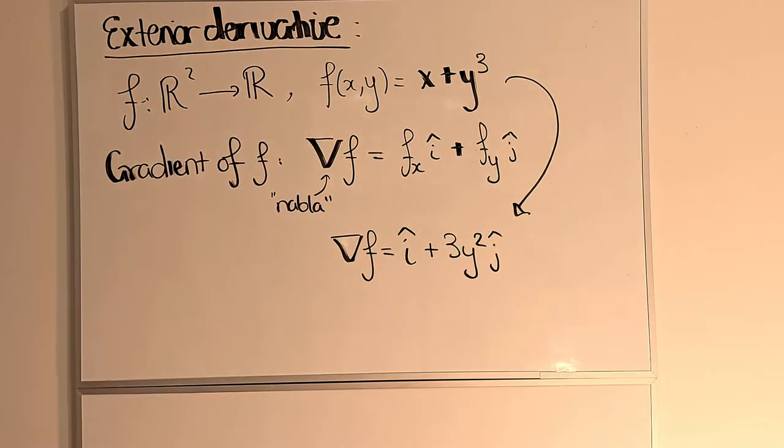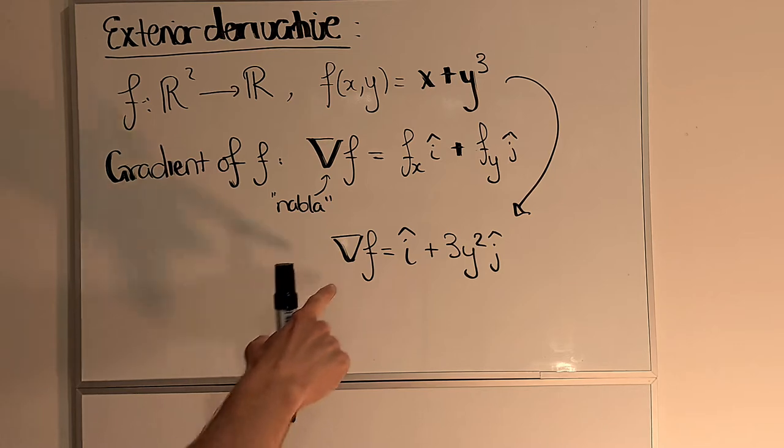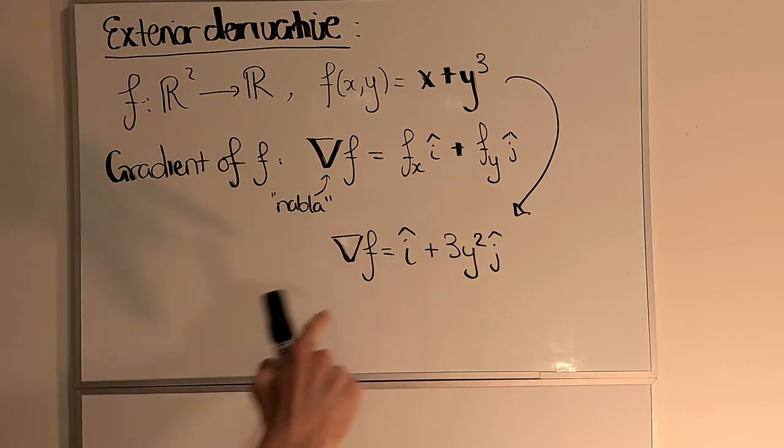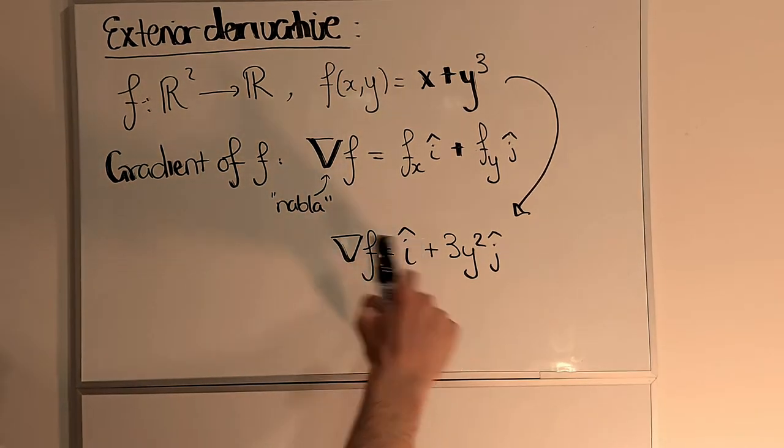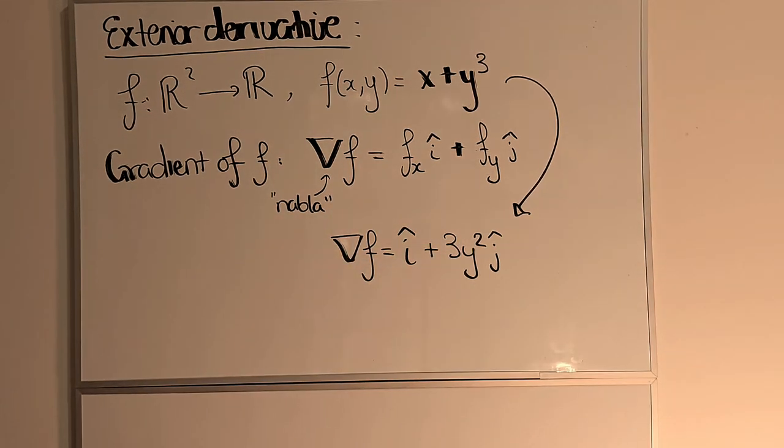and so we have that the gradient field of f, or the gradient of f, is i hat + 3y² j hat.